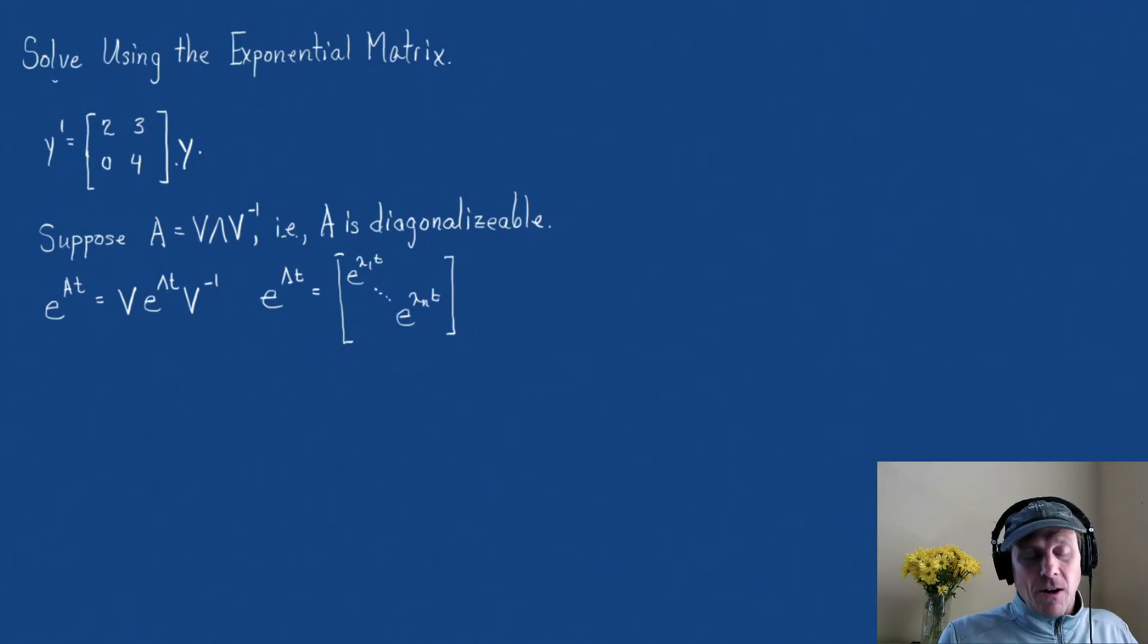So, first off, we need to find our eigenvalues, then our eigenvectors. So, in this problem here, I'm going to do this a little bit more quickly today, but we can see that lambda 1 is 2 and that lambda 2 equals 4. So, let's solve this.